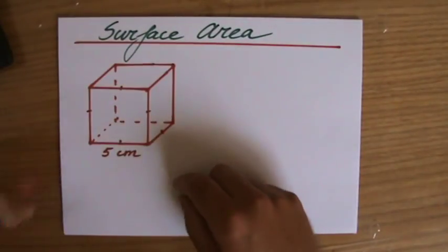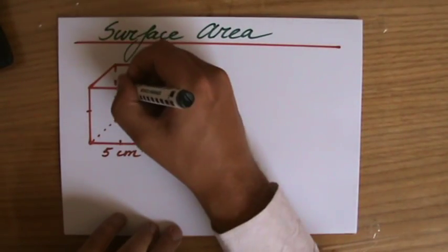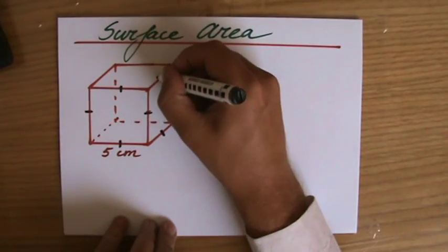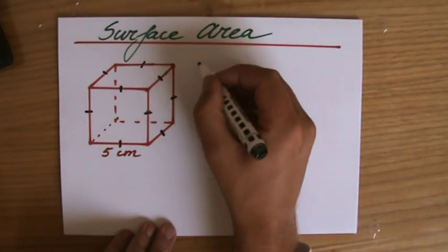So what did I sketch here? I've sketched a cube, which if you like is a three-dimensional square. All those sides are equal in length—they are all five centimeters. So that is a cube.